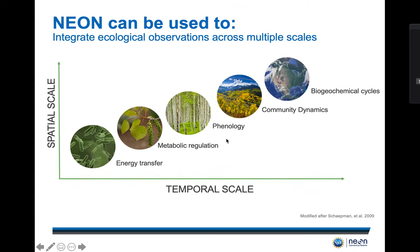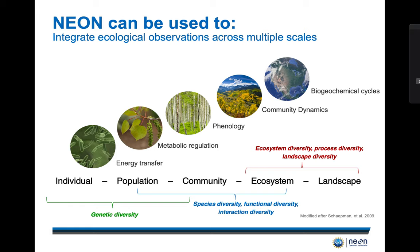So how can NEON be used? NEON provides data that can be used to address research questions across temporal and spatial scales. NEON data sampling is designed to scale within a single field site and across field sites to enable researchers to ask questions from the individual to the continental scale. NEON is also designed to collect data for 30 years. Using NEON data, biodiversity can be studied at several different scales, from the genetic diversity within and between individuals to ecosystem and process diversity across large regional or continental scales.